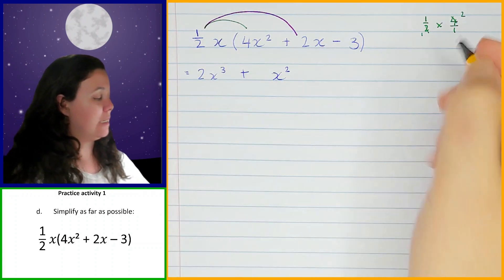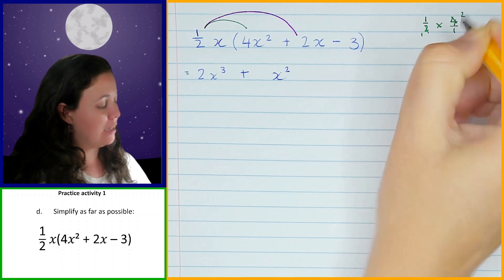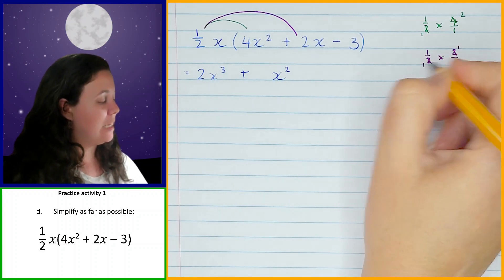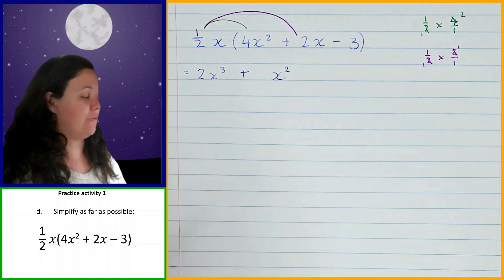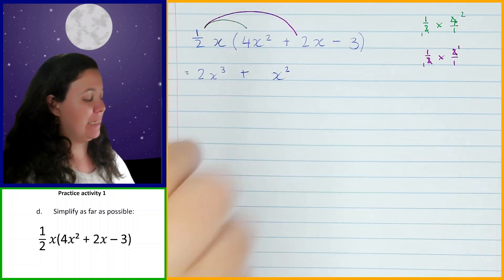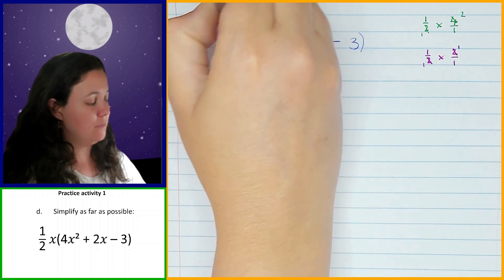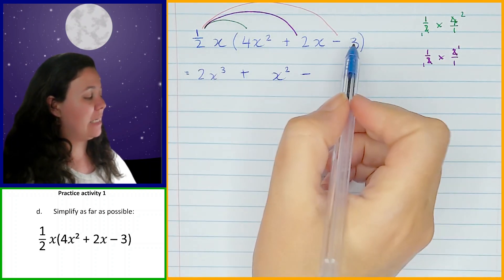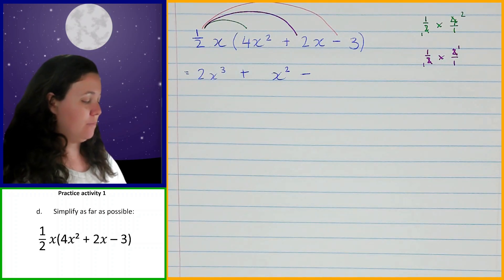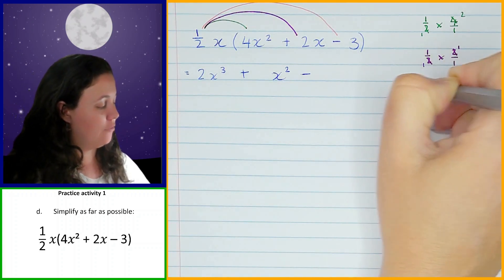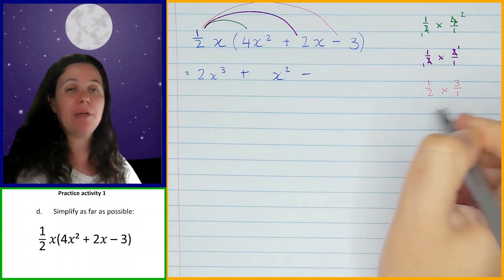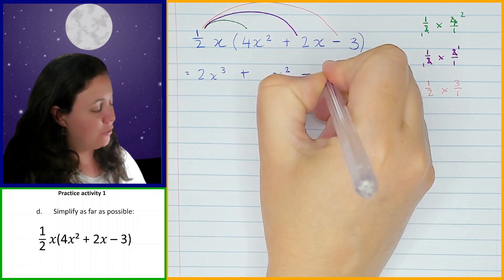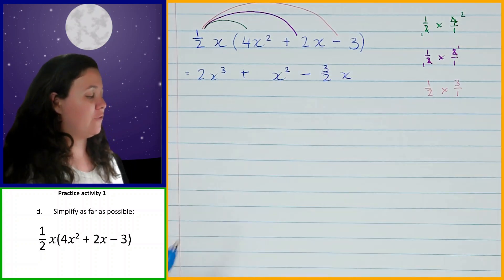And then half x times negative 3 — positive times negative is negative. We have a half times 3 over 1, and nothing cancels, so that gives 3 over 2. So the last term is minus three-halves x. So the full answer is 2x cubed plus x squared minus three-halves x.